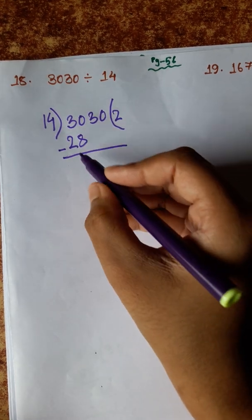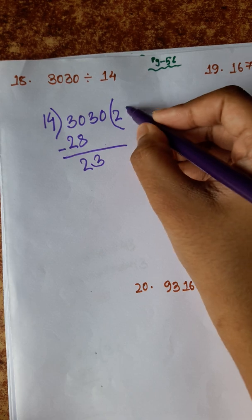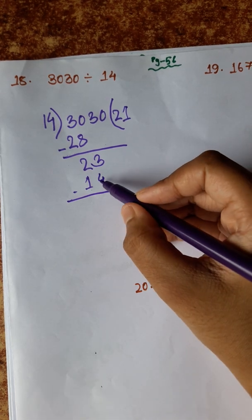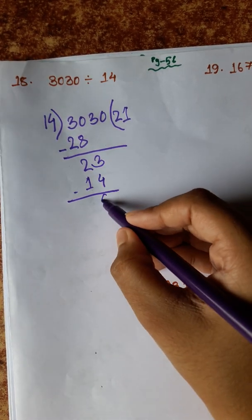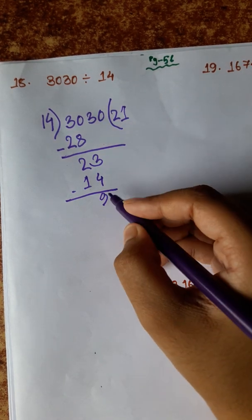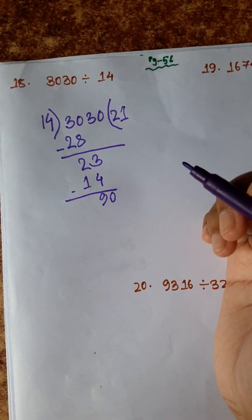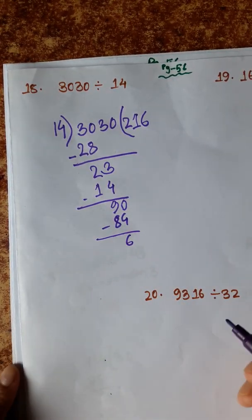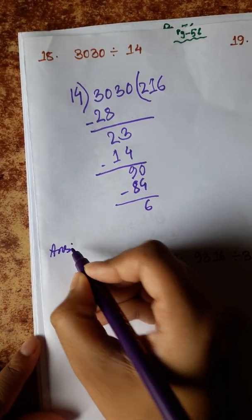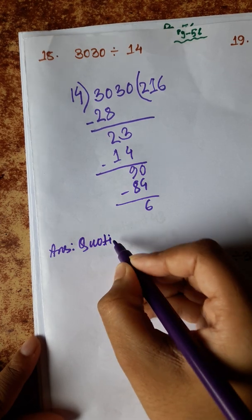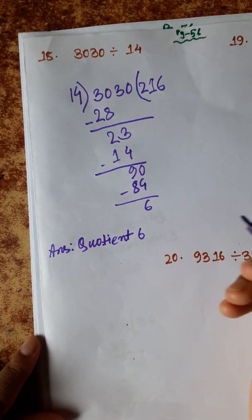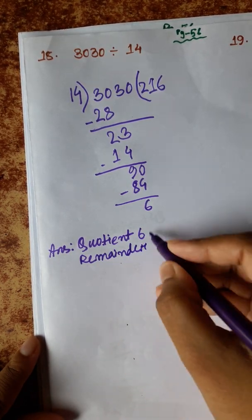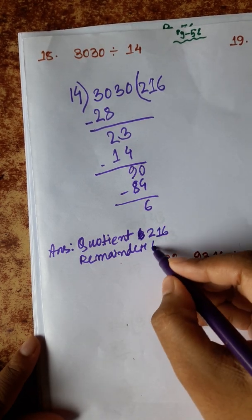Working through the division steps: 10, 8, 2, 3, 14, 1, 14, 13, 4, 9, 0. 6, 84, 6, 6. So the answer: quotient 216, remainder 6.